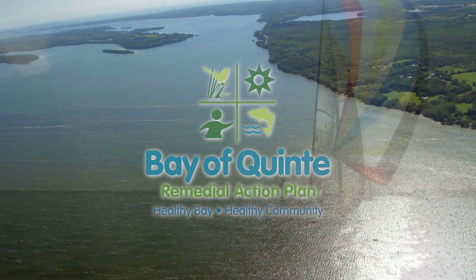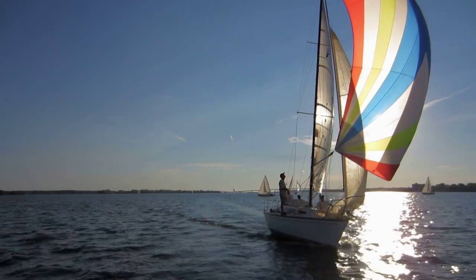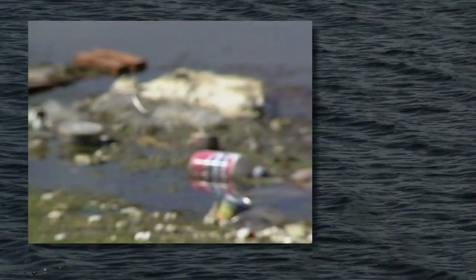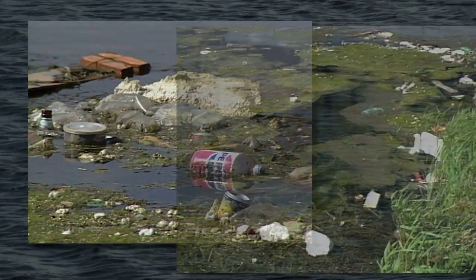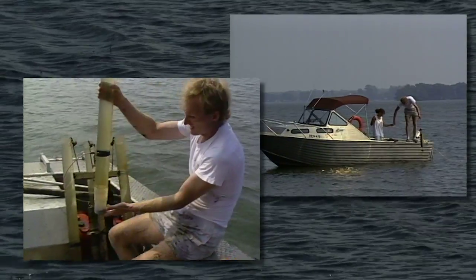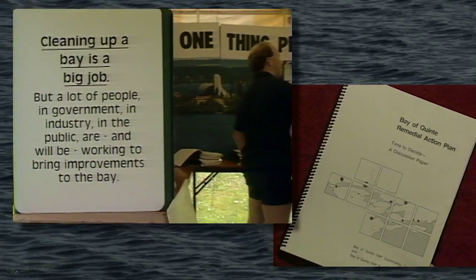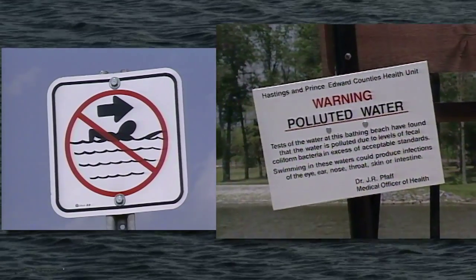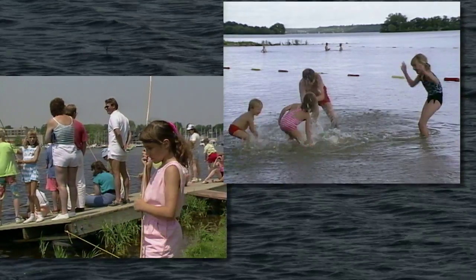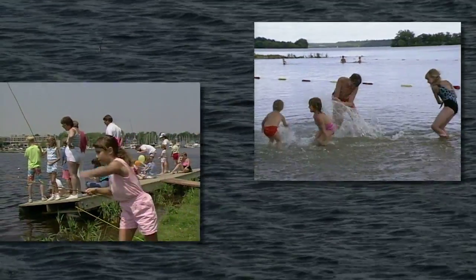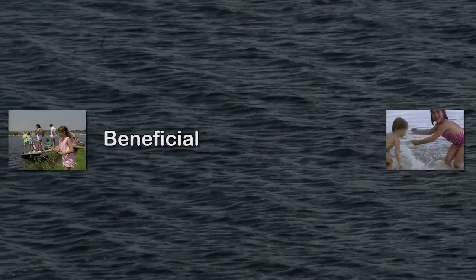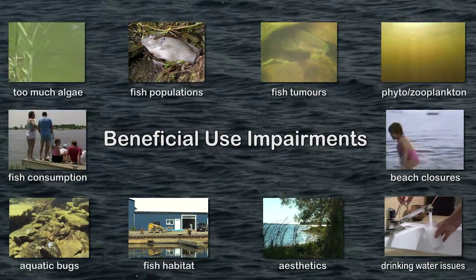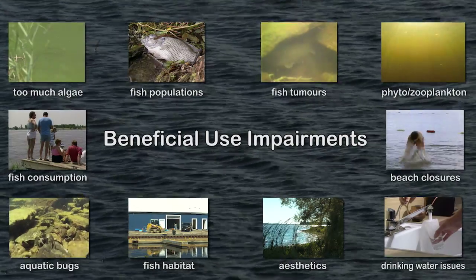The Bay of Quinte Remedial Action Plan is restoring the environmental integrity and the long-term viability of the Bay of Quinte ecosystem. In the early 1990s, environmental damage that had been occurring to the Bay of Quinte for decades was identified and documented in a Remedial Action Plan. This plan identified the environmental challenges that threatened the Bay of Quinte ecosystem and people's use and enjoyment of the Bay. Those environmental challenges were grouped together and called beneficial use impairments. The Bay of Quinte has 10 beneficial use impairments, and the Remedial Action Plan implements actions to address them.